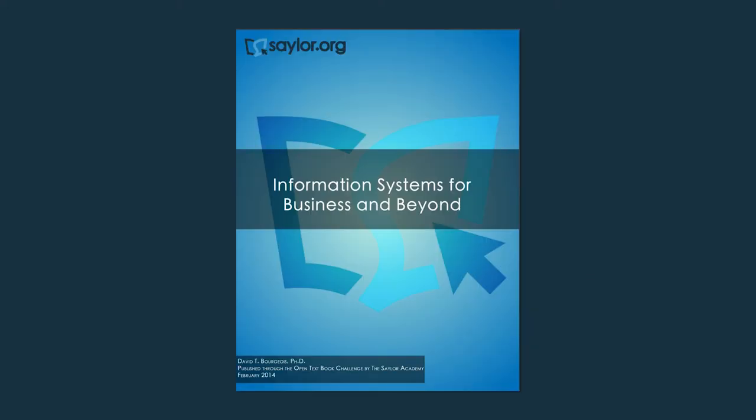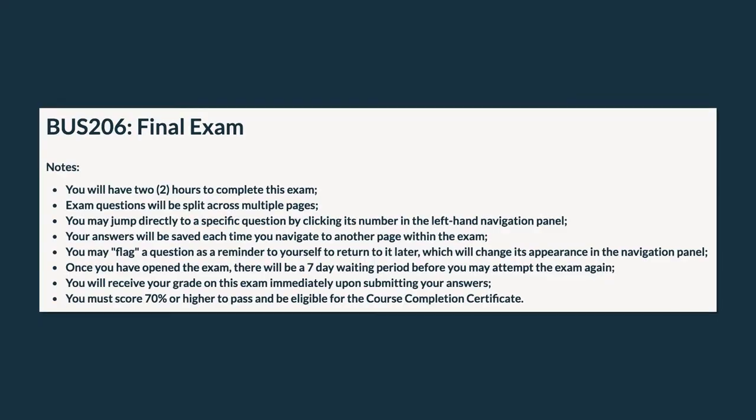As you work your way through Business 206, you will notice that the course is based mainly on the textbook Information Systems for Business and Beyond, as well as several videos and articles presented by industry experts. All of the resources are important to meet the learning outcomes of the course and prepare you for the final exam. The final exam is based on the learning outcomes and draws upon the knowledge you have gained from all of the course materials — that is the textbooks and the multimedia elements.